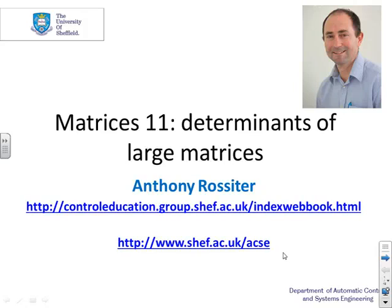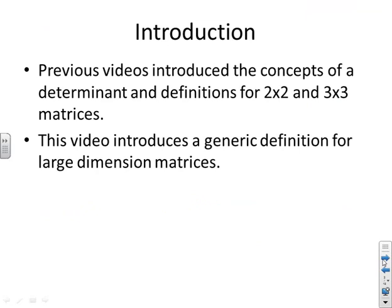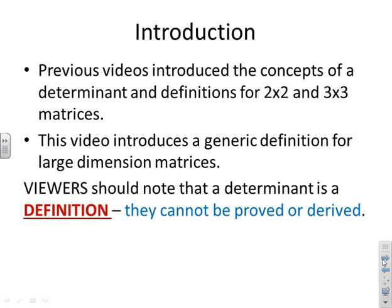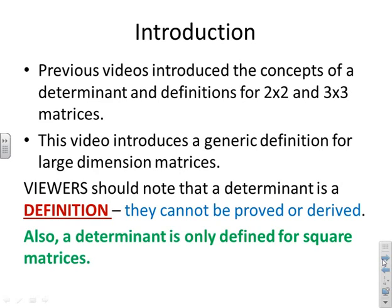This video looks at determinants of large matrices. Previous videos have introduced the concept of a determinant and definitions for 2x2 and 3x3 matrices. Now we want to extend this definition and look at larger dimension matrices. Viewers are reminded again that these are definitions. They can't be proved or derived. And you also need to remember a determinant is only defined for square matrices.